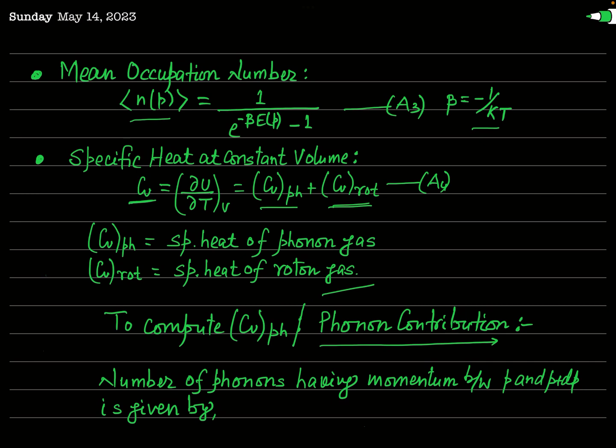Cv_ph represents the specific heat of the phonon gas, or the contribution of phonons to Cv. In this lecture, we will only calculate Cv_ph, the phonon contribution. Cv can be calculated only when you find the internal energy of the phonon gas, and for finding the internal energy, you first have to calculate the total number of phonons in the system, and after that you can calculate the total energy.